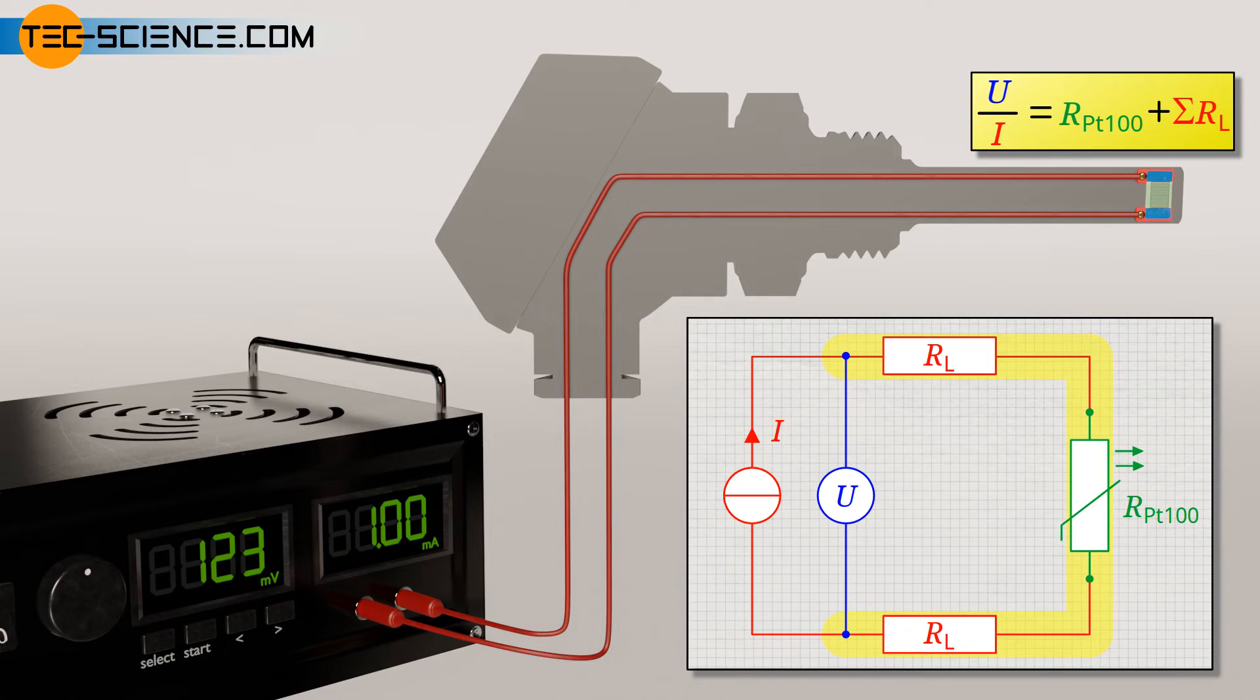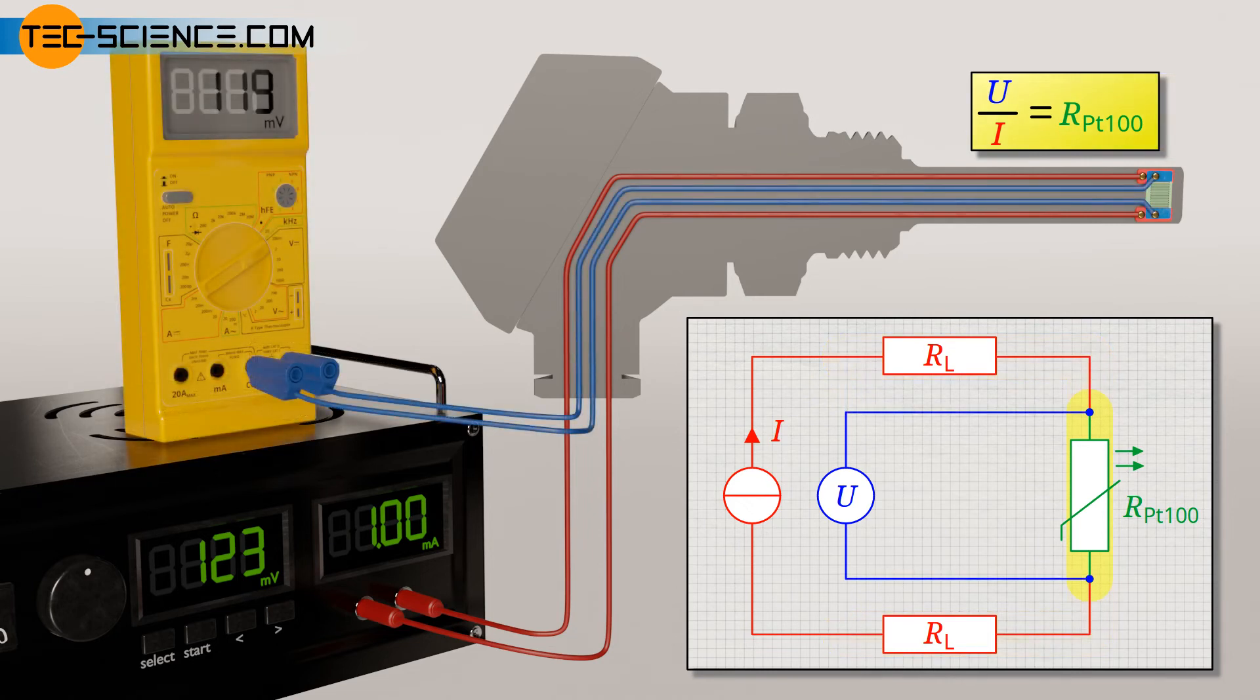The lead resistances can be compensated by four-wire sensing, which is then called four-terminal sensing. In this case, the current source and voltage measurement are separated from each other. This means that the voltage is no longer measured directly at the current source, where voltages across the leads would also be measured, but directly at the sensing resistor. This means that four wires are required. Two for the power supply to generate the constant current and two more for measuring the voltage. With the known constant current of the power supply unit and the measured voltage directly across the PT100, the resistance can now be determined from Ohm's law without lead resistances influencing the result.